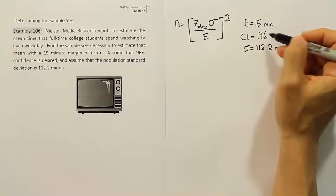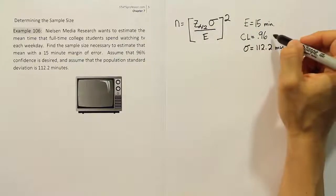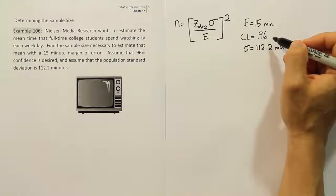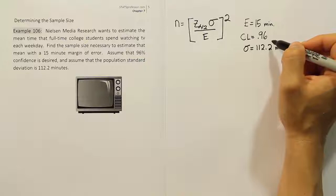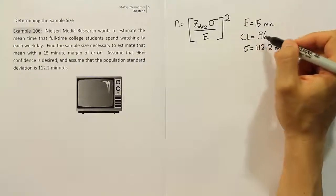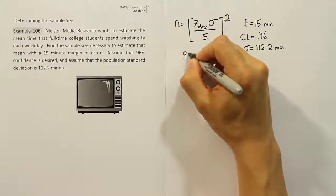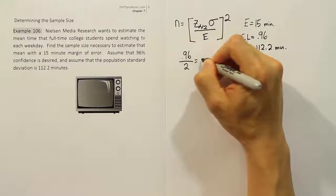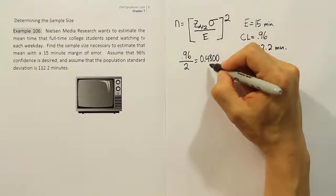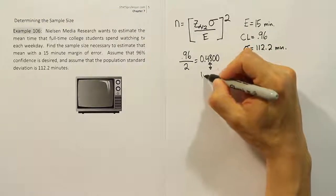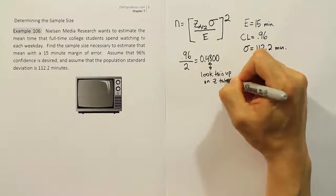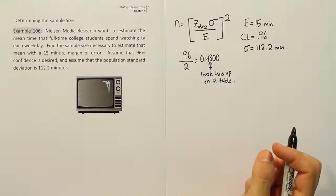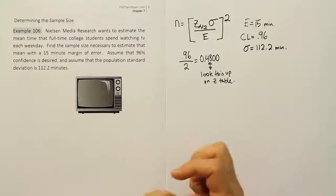Often we use the T table because it has Z critical values for confidence levels of 99, 98, 95, 90, and 80%. But we don't have 96% on the T table. So we'll divide 0.96 in half to get 0.4800, then look this up on the Z table to find Z_α/2.